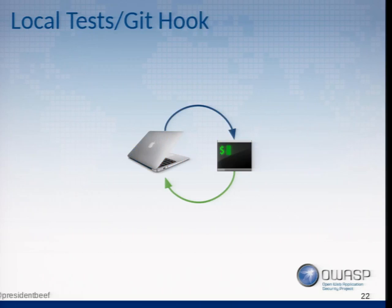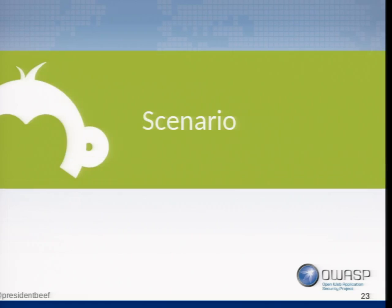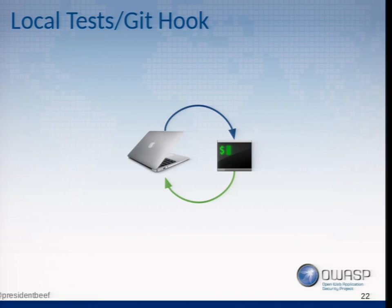Another option is to have the test run locally on the development machine, either as part of your test suite, a commit hook, or using something like Guard — a file system monitoring tool that looks for changes and then runs tools. This is the other end of the spectrum: we've got the deployment gate right before deployment, and then we have running tests as the code is being developed on the developer's machine. Your tool has to be fast to do this.